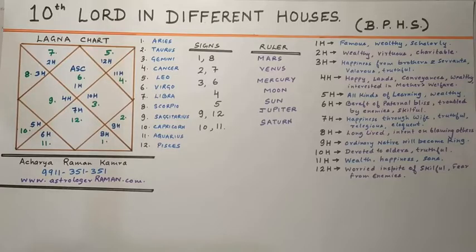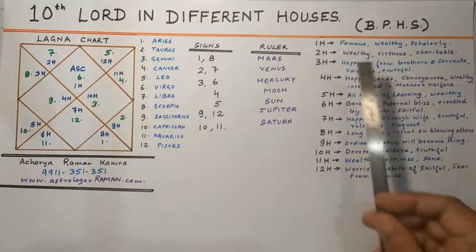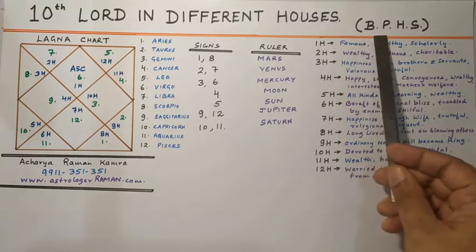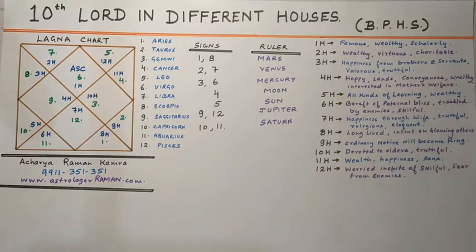Hello friends, this is Acharya Raman, Vedic Astrologer for the last 20 years. Today we will do the results of Lords of Different Houses according to the most authoritative scripture on Vedic Astrology, which is Parashara — or we can say Brihat Parashara Hora Shastra — in a very simple and easy way that even a person not very familiar with Vedic Astrology would understand quite easily.